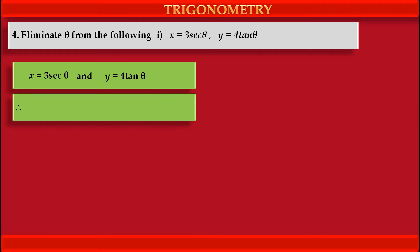From the first condition we can write sec theta equals x upon 3, and from the second condition we can write tan theta equals y upon 4.